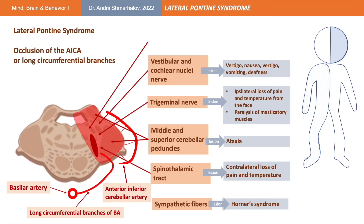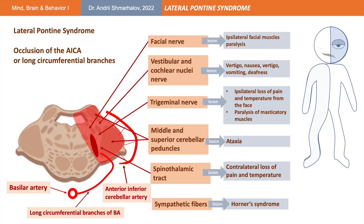The lateral pontine syndrome occurs as a result of the anterior inferior cerebellar artery occlusion. It is very similar to the lateral medullary syndrome and has almost the same symptoms as already mentioned. The key differentiating feature for this syndrome is the involvement of the facial nerve, damage of which will lead to ipsilateral facial paralysis. The patient may demonstrate ptosis and drooping of the mouth corner.